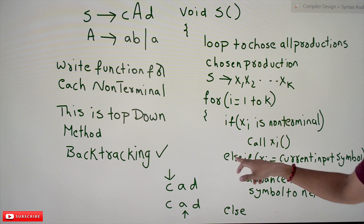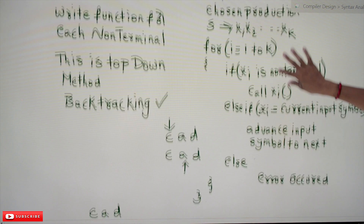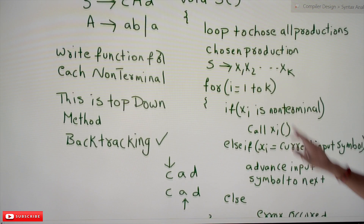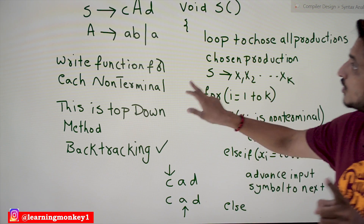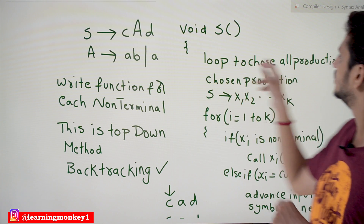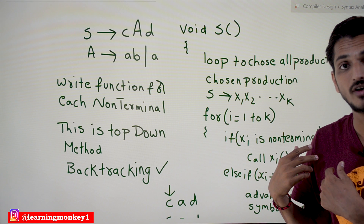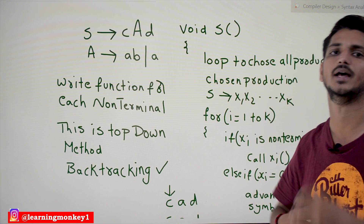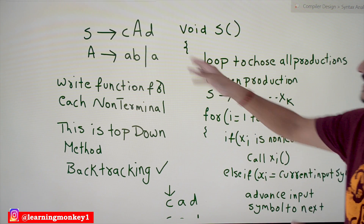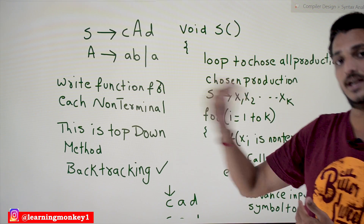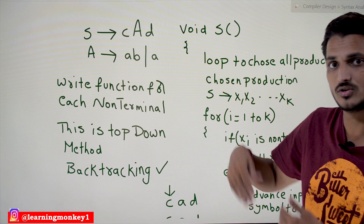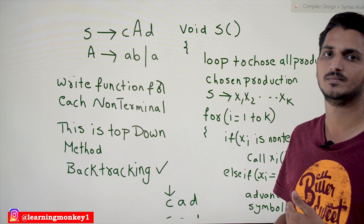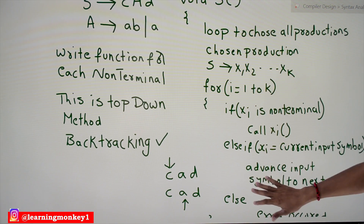If the match fails, we go to the else part and stop the current production's execution. However, it is very important to understand: we do not stop entirely. If another production exists for that non-terminal, we check the next production. Only if all productions fail do we stop. This is backtracking — check one production, if it fails go back and try the next.